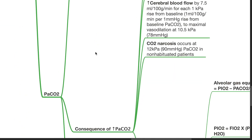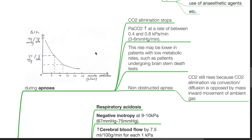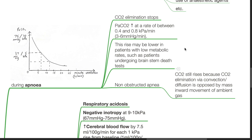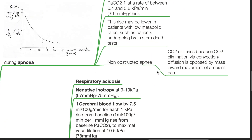PACO2: During apnea, carbon dioxide elimination stops and PACO2 increases at a rate of between 3–6 mmHg per minute. This rise may be lower in patients with low metabolic rates, such as in patients undergoing brainstem death testing. In non-obstructed apnea, CO2 still rises because CO2 elimination via convection or diffusion is opposed by the mass inward movement of ambient gas.